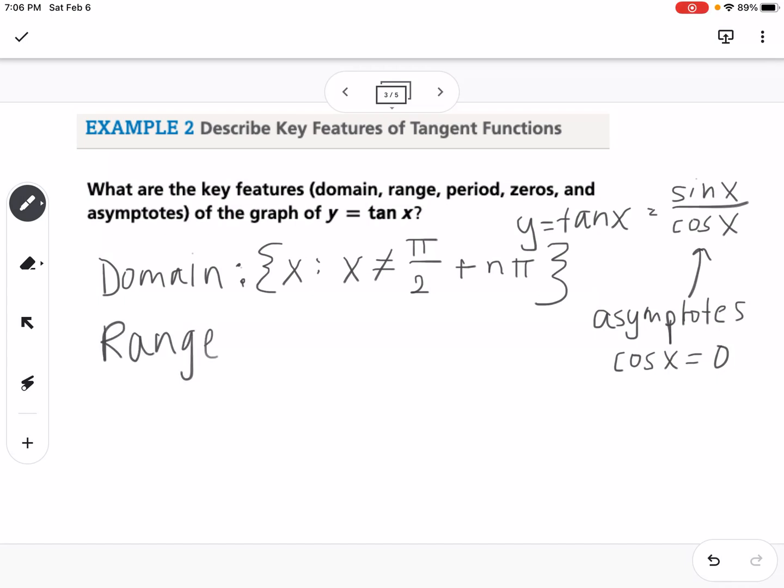Our range, the graph is going to go up positively and down negatively forever, so that means our range is just negative infinity to positive infinity, and then the period is pi.